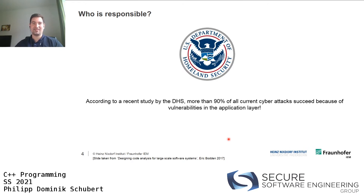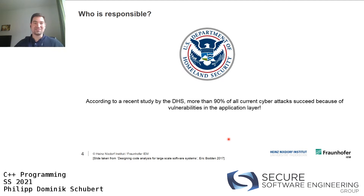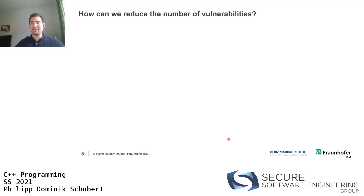A study by the US Department of Homeland Security found that more than 90% of all current cyber attacks succeed because of vulnerabilities in the application layer. So it's basically your fault - because most of you will be working on the application layer later on. That's not good, so we should definitely improve on that.